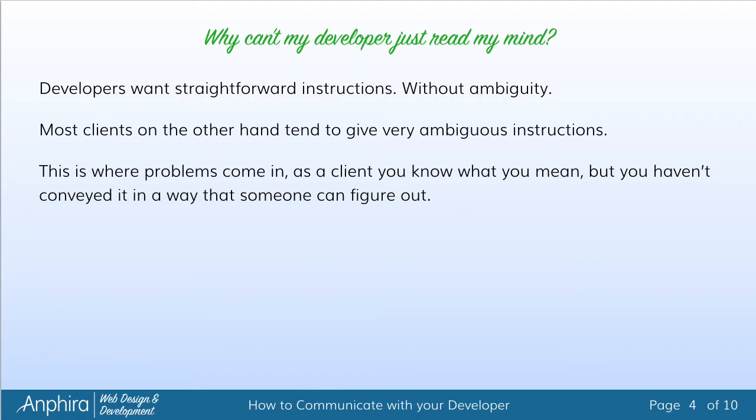Most developers want really straightforward instructions without any ambiguity. However, most clients tend to give very ambiguous instructions. This is where the problem comes in. You as a client know exactly what you mean; however, you haven't conveyed it in a way that your developer can understand it.